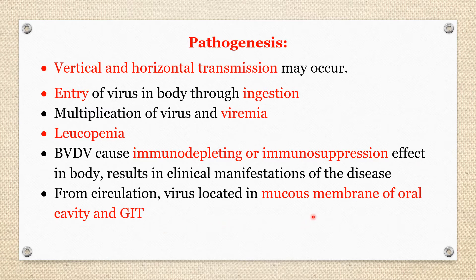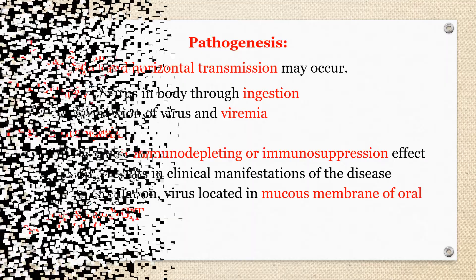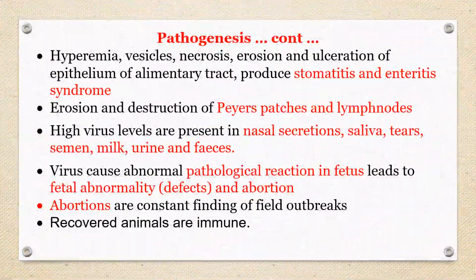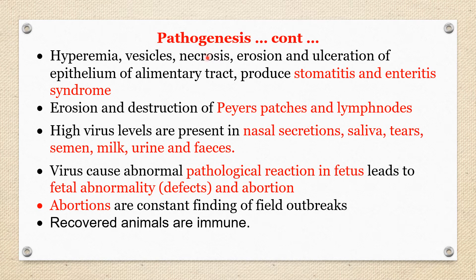BVD virus causes an immunosuppressing effect in the body. This immunosuppression results in clinical manifestation of the disease — the main manifestation is because of the immunosuppressive effect of the virus. From viremia, the virus localizes in the mucous membrane epithelium of the oral cavity and gastrointestinal tract. There is hyperemia, vesicle formation, necrosis, erosion, and ulceration of the epithelium of the alimentary tract, producing stomatitis and enteritis.